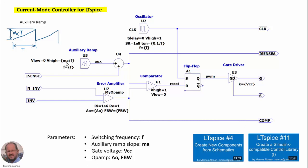You can see here the waveform corresponding to the auxiliary ramp. So at this point, at the end of the period, we have a value which is MA times T, so it is MA over F.